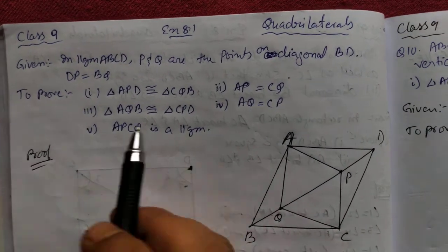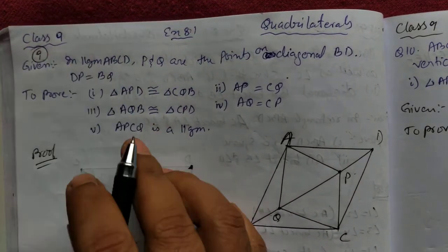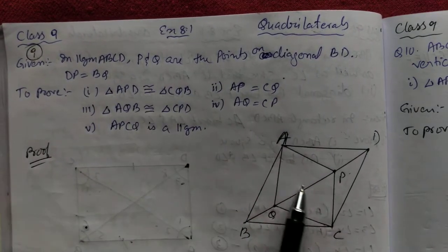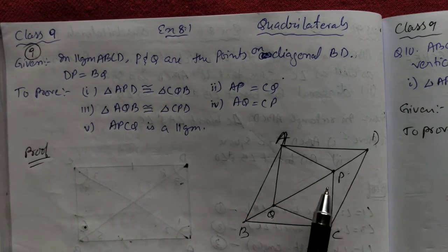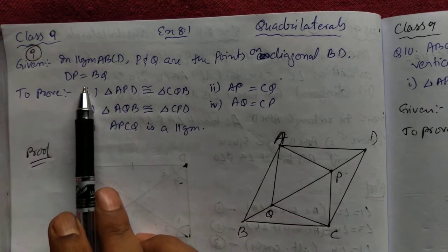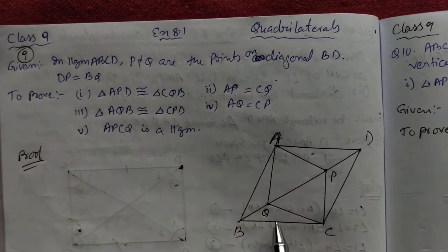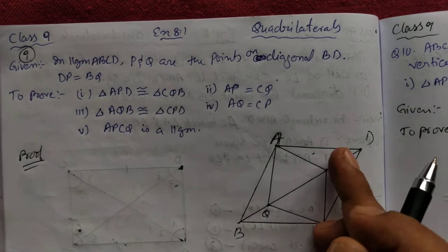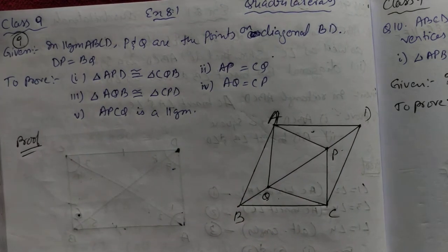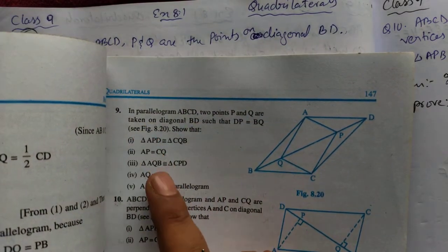Hello students of grade 9. We will be doing exercise 8.1, question number 9 and 10 in the same video. Question number 9: they have given ABCD is a parallelogram. P and Q are points on the diagonal AB such that BP and PD are the same as per the given. Then you are going to prove triangle APD congruent to another triangle. I have already written the given and to prove.